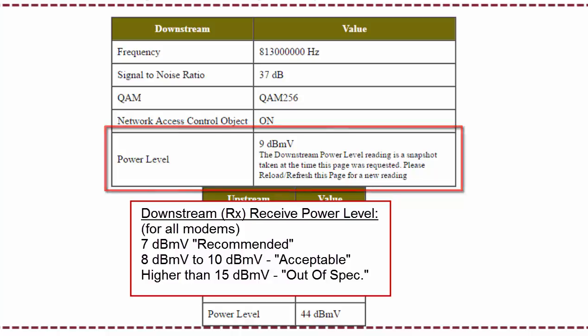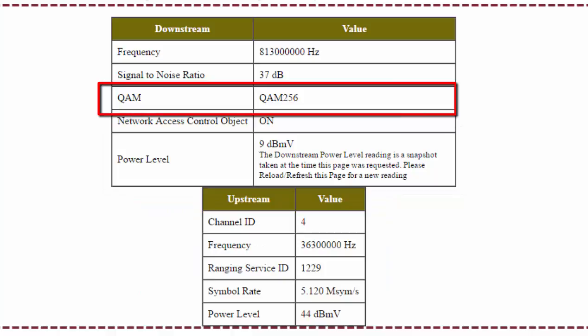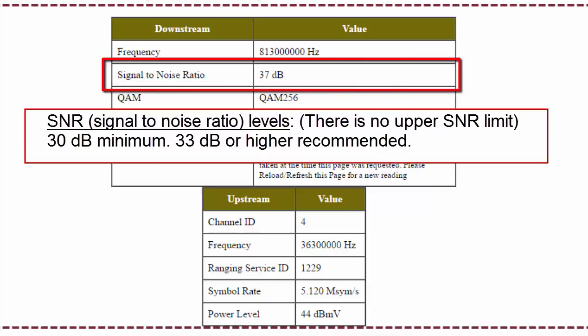Next we look at the QAM. This should say QAM256. If it says anything lower, like QAM64 or QAM16, then that indicates you have a problem. QAM256 means it's operating at the fastest speed that it can. Next we look at the downstream signal-to-noise ratio, and we see here that I have a value of 37. Anything 33 or higher is considered fine. If it's below that, then it indicates you have a problem.